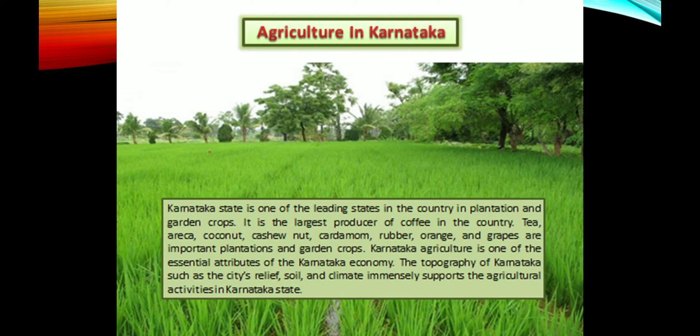Agriculture in Karnataka: Karnataka is one of the leading states in plantation and garden crops. It is the largest producer of coffee in the country. Tea, areca, coconut, cashew nut, cardamom, rubber, orange, and grapes are important plantation and garden crops. Karnataka's topography — including relief, soil, and climate — greatly supports agricultural activities in the state.